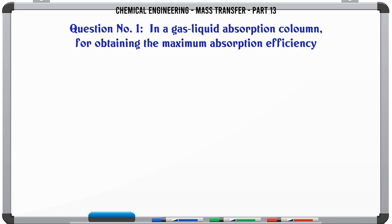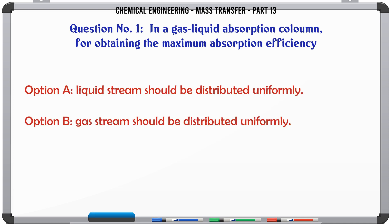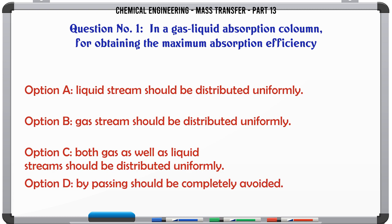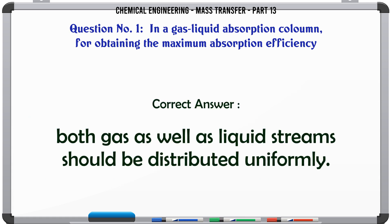In a gas-liquid absorption column for obtaining the maximum absorption efficiency: A. Liquid stream should be distributed uniformly. B. Gas stream should be distributed uniformly. C. Both gas as well as liquid streams should be distributed uniformly. D. Bypassing should be completely avoided. The correct answer is: Both gas as well as liquid streams should be distributed uniformly.